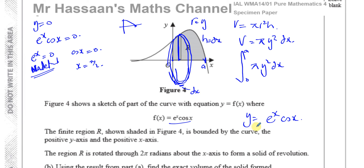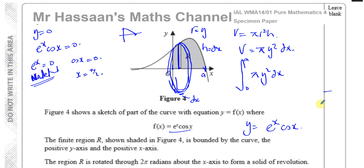So question 7 is done: part A was integration by parts in a very different style, and part B was volumes of revolution. I'm sorry it took a while, but I was showing different ways of doing part A to make sure. Here is the playlist for other questions from this specimen paper, and another playlist for integration questions from P4. Subscribe if you wish — thank you for watching and hope to see you soon.